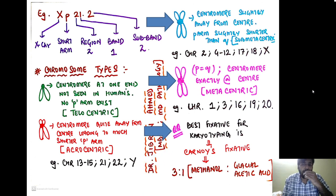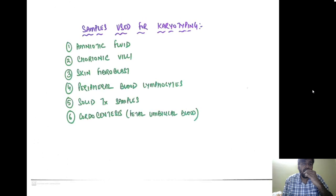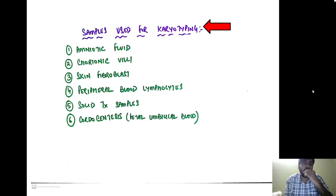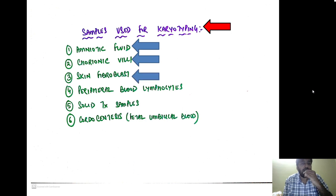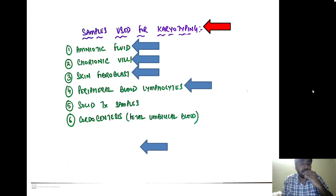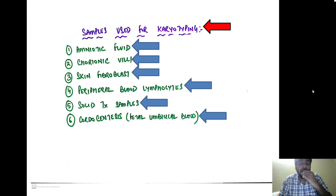The best fixative for karyotyping is Carnoy's fixative, which uses a 3:1 ratio of methanol and glacial acetic acid. Samples used for karyotyping include amniotic fluid, chorionic villi, skin fibroblasts, peripheral blood lymphocytes, solid tumor samples, and fetal umbilical blood obtained by cordocentesis.